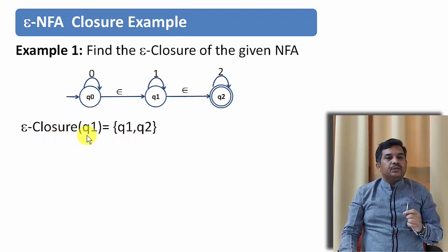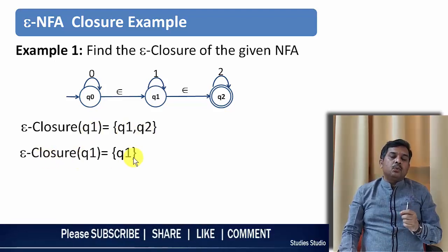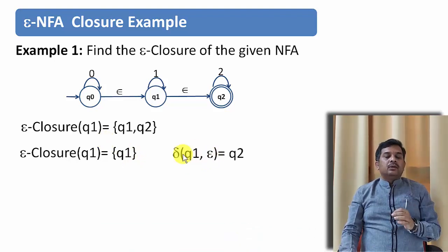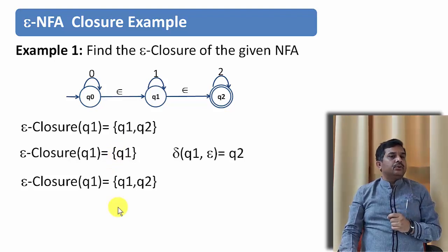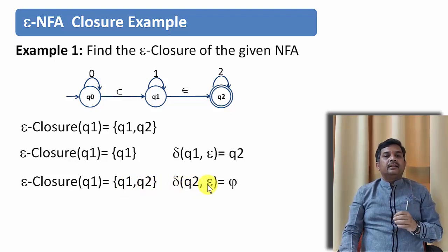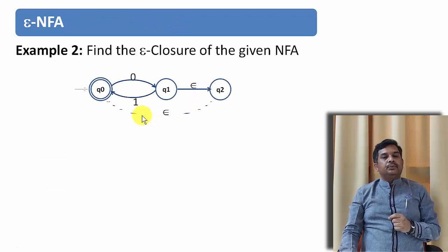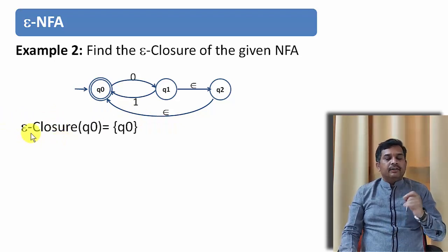Similarly let us try to find epsilon closure of Q1. We are saying it will be Q1 and Q2. How? Epsilon closure of Q1 is Q1 according to the first formula. And let us try to find epsilon transition on Q1. So epsilon transition on Q1 is Q2. So we will be adding this to the existing epsilon closure. So epsilon closure of Q1 becomes Q1 and Q2. Now let us try to find epsilon transition Q2 and it is phi. So we need not do anything. Similarly we can find epsilon closure of Q2 is Q2.